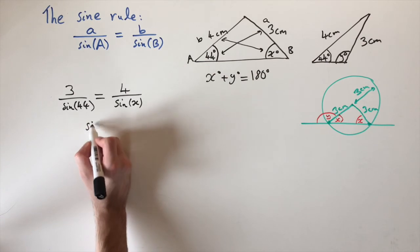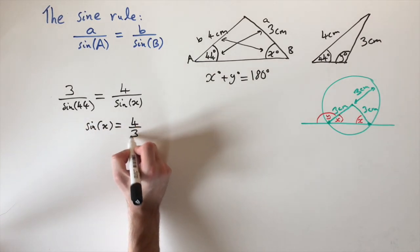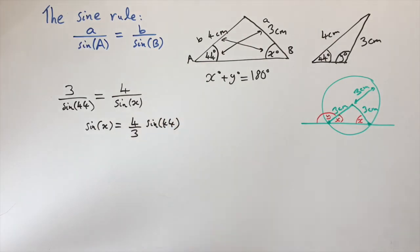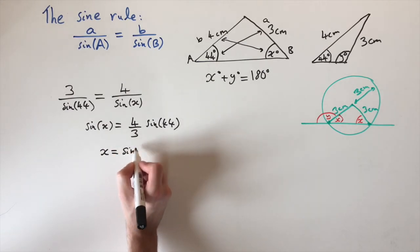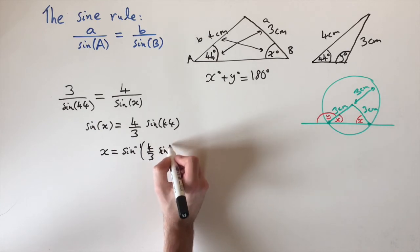this by rearranging. So we have sin(x) equals 4 divided by 3 times sin(44°). To find x, we need to invert sine. So x equals sin⁻¹(4/3 × sin(44°)).